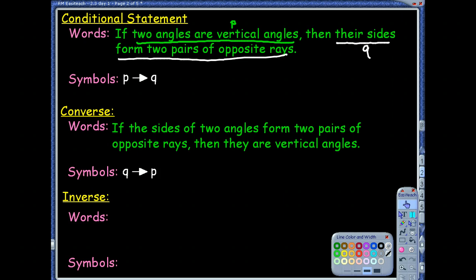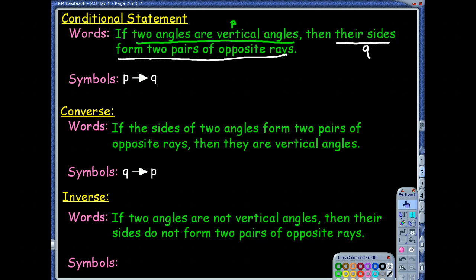Now, we've got our two statements. When we think of the inverse, we start throwing in some of those words that mean not, that negate. We're negating the conditional. So if two angles are not vertical angles, then their sides do not form two pairs of opposite rays. Just remembering again that inverse negates, so we use those not words to negate the conditional statement.